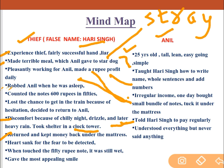Next morning Anil told Hari Singh he would pay him regularly, and gave him the 50 rupee note. Before that, his heart sank for fear of being detected — he thought he had been caught. But when he touched the 50 rupee note it was still wet.